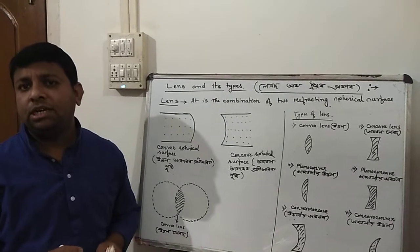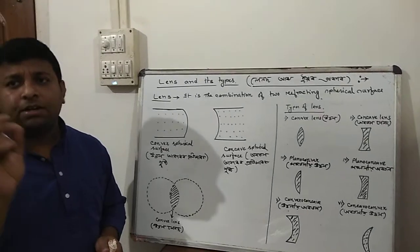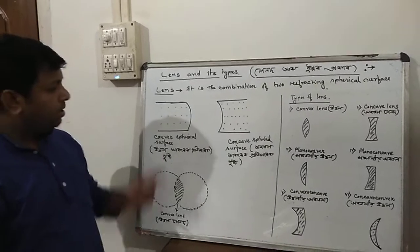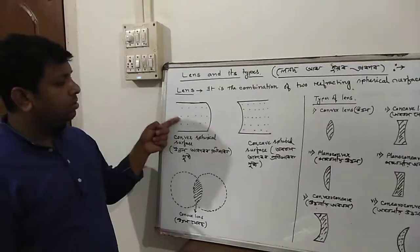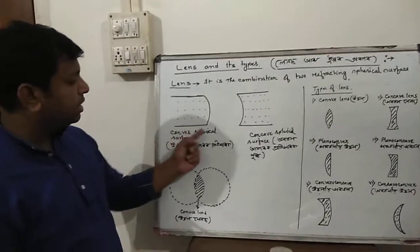This is a combination of two spherical surfaces. Refracting spherical surfaces. Refracting spherical surfaces are two. What is this? This is a convex, convex spherical surface.